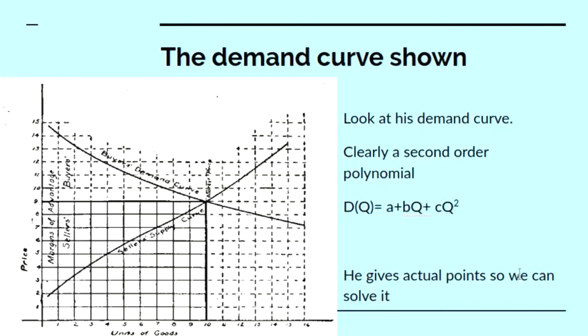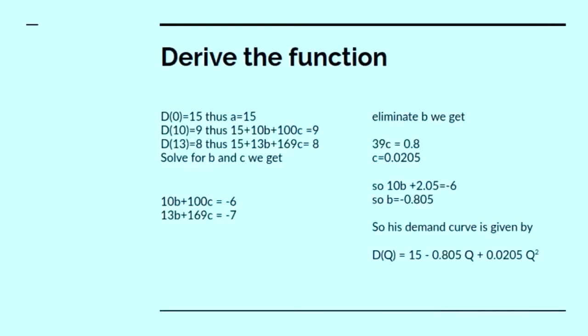Since Marshall gives actual points, we can solve this polynomial. He shows that when demand is zero, demand is zero and price is 15. So we know a must be 15 in his equation. When demand is 10, price is 9. When demand is 13, price is 8.